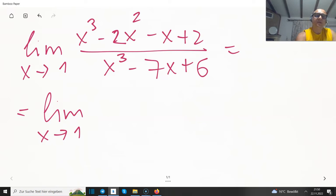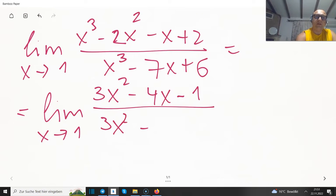So what are we going to get in the numerator? This is 3x² minus 4x minus 1. What's happening in the denominator? It's 3x² minus 7. So what am I going to get if I'm putting 1 now? Well you see, we're going to get 3 minus 4 minus 1, and minus 1 more is going to be minus 2. And we're going to get minus 2 divided by minus 4, so it's just a half. Easy breezy.